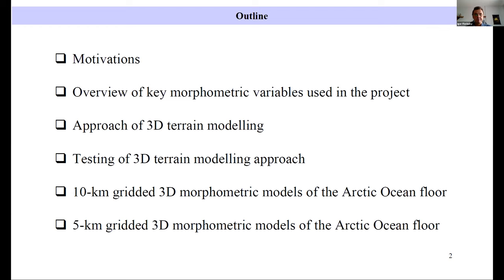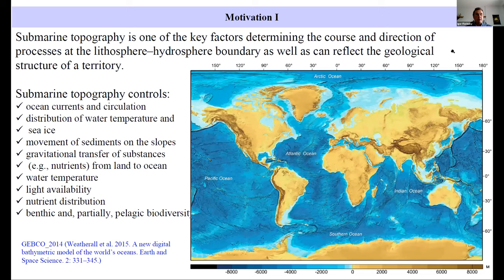Motivation number one. Submarine topography is one of the key factors determining the course and direction of processes in the hydrosphere boundary, as well as reflecting the geological structure. Submarine topography controls ocean currents and circulation, distribution of water temperature and sea ice, movement of sediments on the slopes, gravitational transport of substances, for example, nutrients from land to ocean.